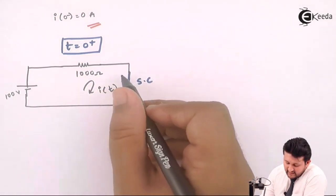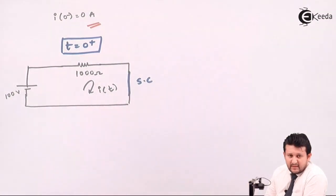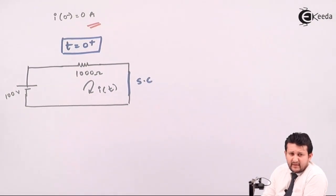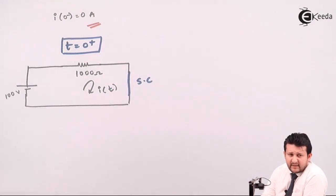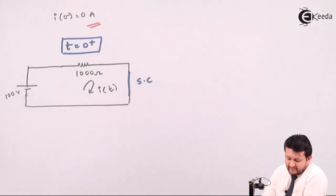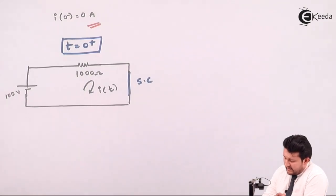That is the basic difference between this case and the earlier case. In the inductor case, current initially could not pass through the inductor due to its resistivity, so it had to oppose the current and the circuit was open. In the capacitor case, it was uncharged and had to accept current to get charged, so the loop must be closed — that's why you short circuit the capacitor.